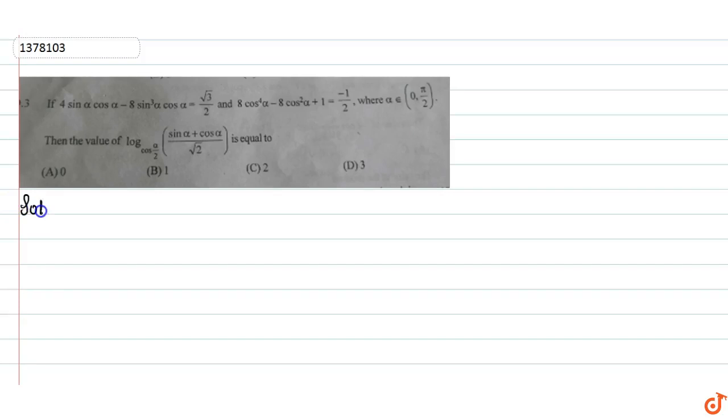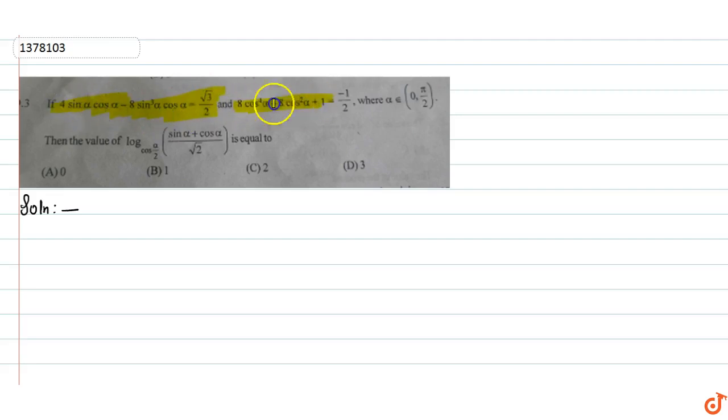In this question, if 4 sinα cosα − 8 sin³α cosα = √3/2, and 8 cos⁴α − 8 cos²α = −1/2, where α belongs to 0 to π/2, then we have to find the value of log base cos(α/2) of (sinα + cosα) / √2.